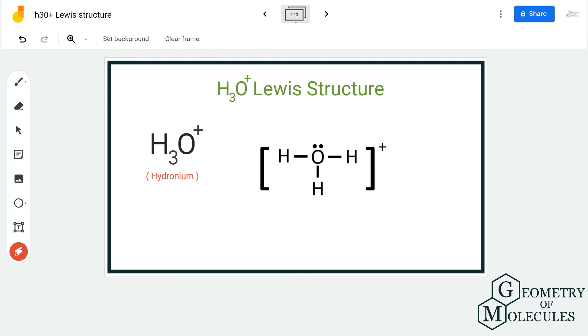So as we have used up all the valence electrons, the octet of the oxygen atom is full and hydrogen has a complete outer shell. This is the Lewis structure of hydronium ion. But because this is an ion...